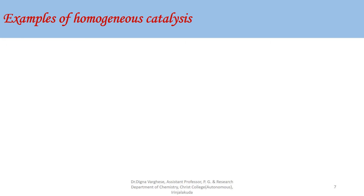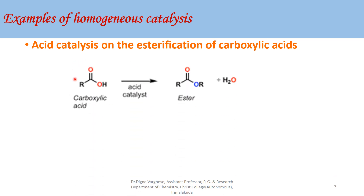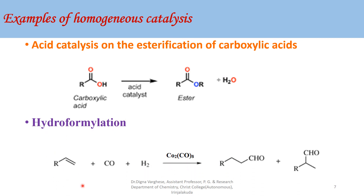Here are various examples of homogeneous catalysts. The first reaction is acid catalysis in the esterification of carboxylic acids — a carboxylic acid in the presence of an acid catalyst forms an ester and water. The second reaction is the hydroformylation reaction, where an alkene in the presence of a catalyst such as Co2(CO)8 reacts with carbon monoxide and hydrogen, converting the alkene into an aldehyde.